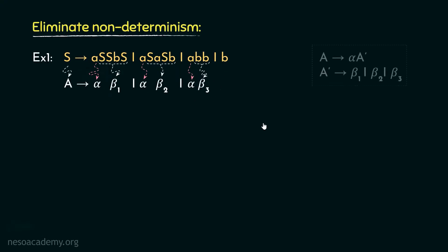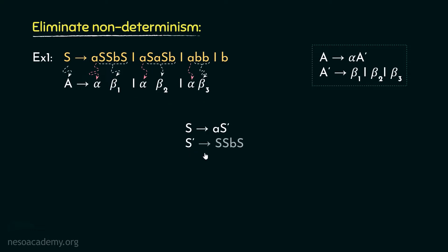Now we need to convert this grammar into the standard form. From the start symbol S, we will produce the alpha — the common prefix — followed by a new non-terminal. So S can be rewritten as A followed by S'. From S', we derive the betas: S' can be rewritten as SSBS (beta1), SASB (beta2), or BB (beta3). Since B can also be derived from S, the rule S → B should also be included.